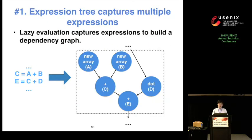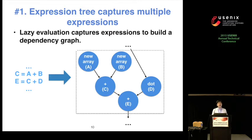In order to see multiple expressions at the same time, Spartan lazily evaluates the program and builds a dependency graph. Instead of evaluating expressions immediately, Spartan postpones evaluation to build the expression graph, then evaluates all expressions after finishing optimization.